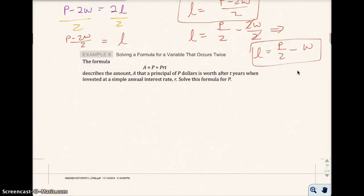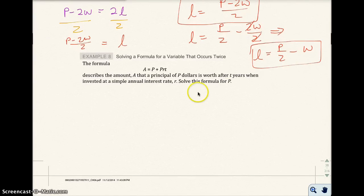Okay? And the last example, example 8, we're trying to, and we'll actually use this formula later on in the class, which I believe is the last chapter, or chapter 4. We're going to use this formula. It's the formula that describes the amount a principal of P dollars is worth after x years when invested at a simple annual interest rate. Solve this formula for P. So we're going to write that formula down. We're trying to solve for P. And notice how P is in 1 and 2 places. So that's the difference between this problem and example 7.